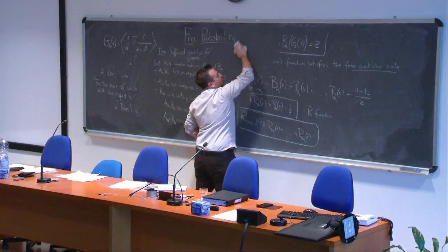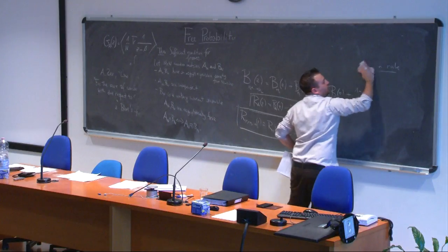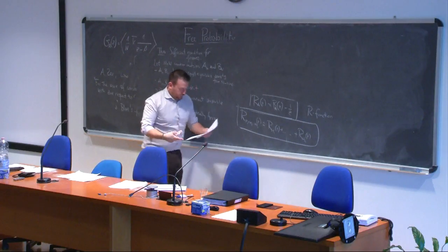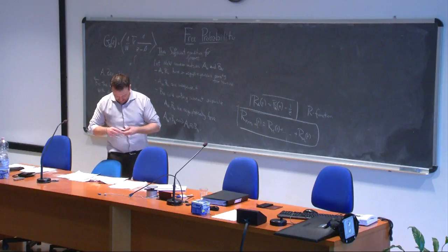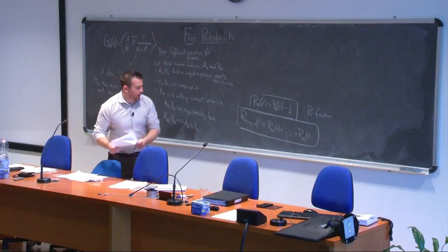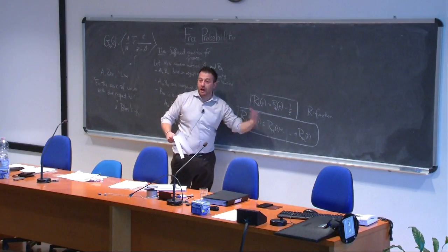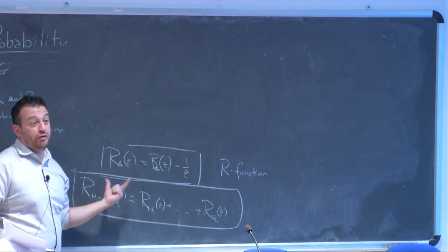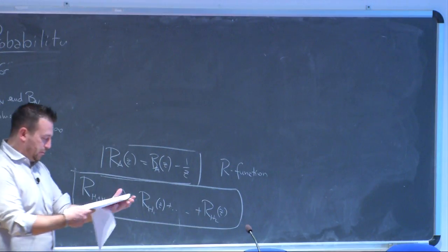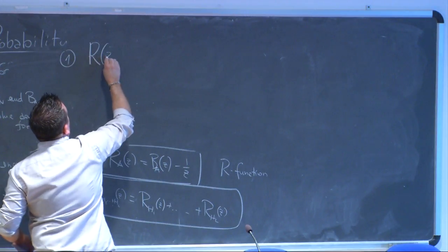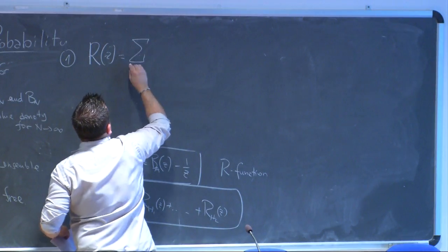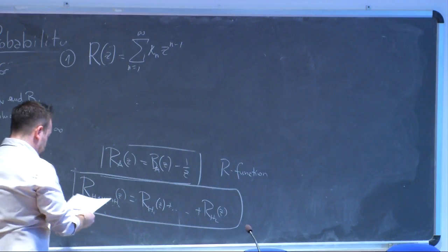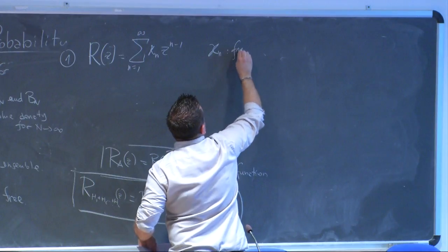What is the usefulness of the R transform? The R transform is the generating function of objects called free cumulants, just as the cumulant generating function generates cumulants for standard random variables. Specifically, R(z) can be written as the sum over n ≥ 1 of k_n z^(n−1), where k_n are called free cumulants.